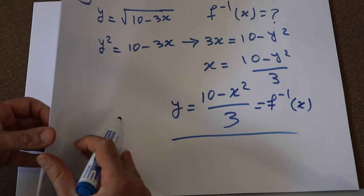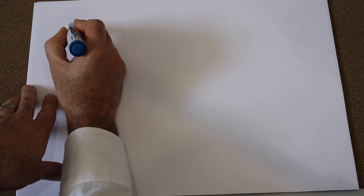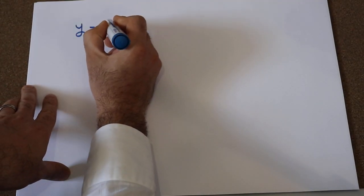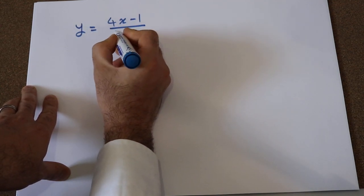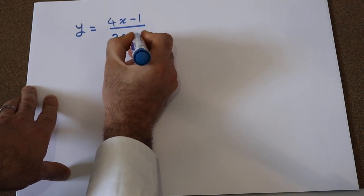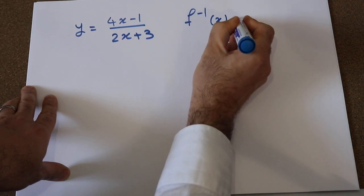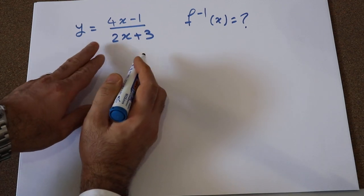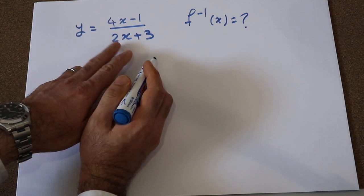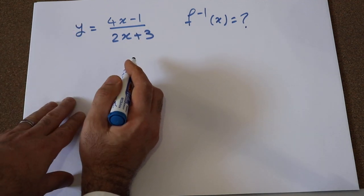Let me solve another example. If the function y is defined as (4x minus 1) divided by (2x plus 3), the question is: what is the inverse of this function? The same approach applies — first you need to express x as a function of y, and then you interchange x and y.